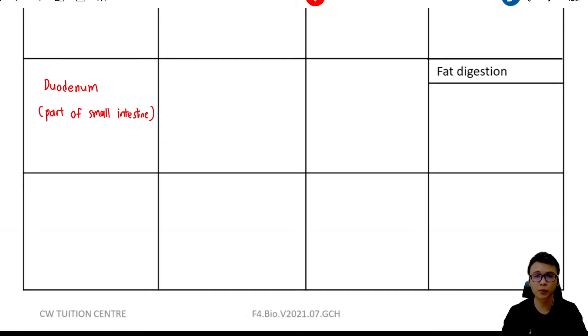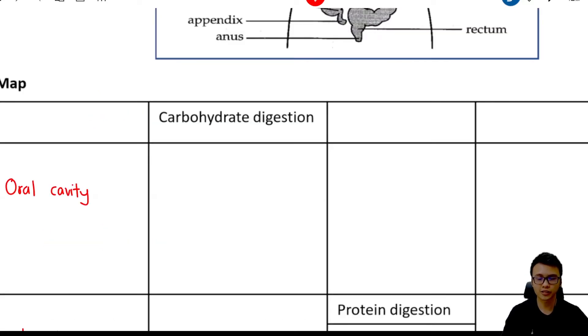This part will receive the pancreatic juice and the bile from the pancreas and the gallbladder. Of course, we are not going to include the gallbladder here because bile is not an enzyme. So it receives the enzyme from the pancreas. And the last part will be the small intestine, which will receive the enzymes from the intestinal epithelium.